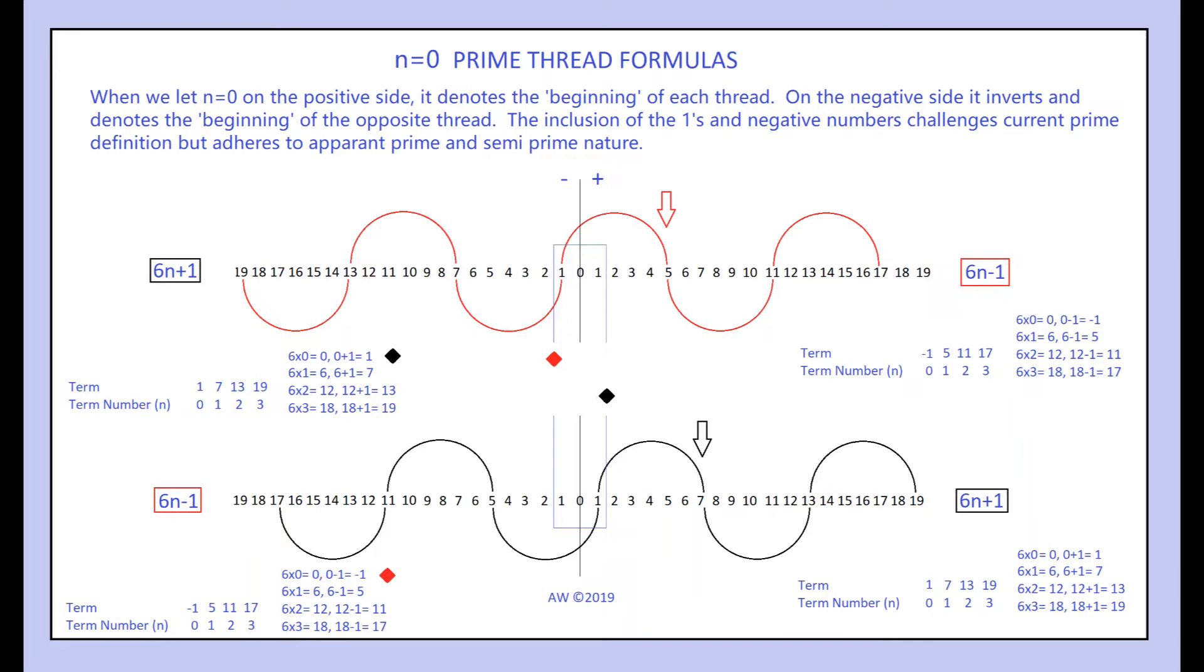So not only do the formulas exchange sign and thread as they cross 0, the negative side of these threads, when n equals 0, produce the beginning of the opposite thread. So there are two inversions happening here.